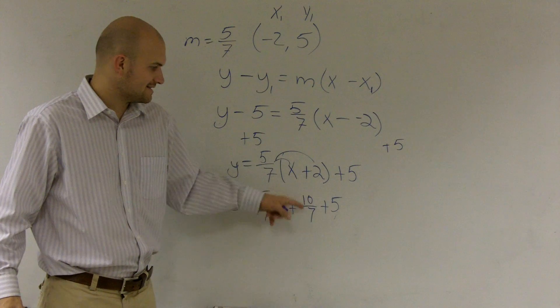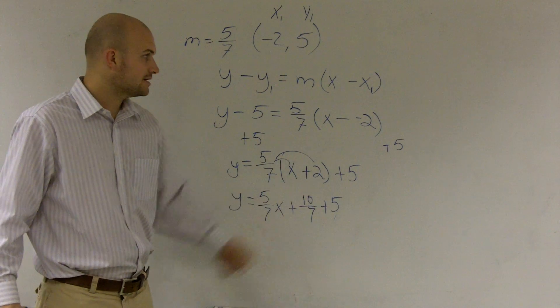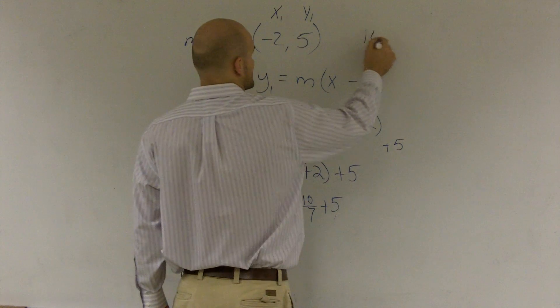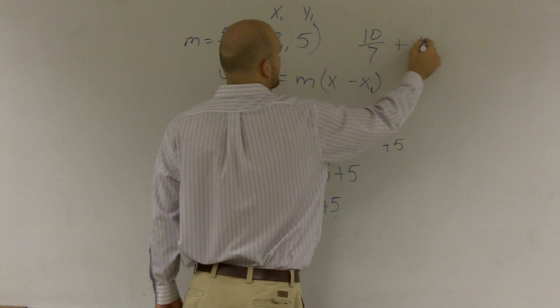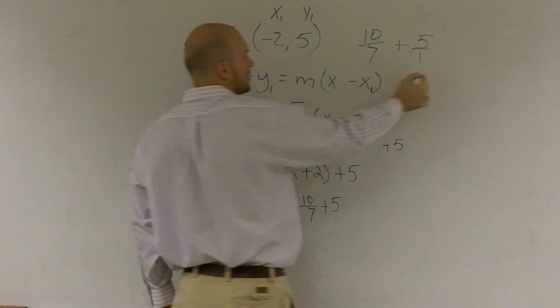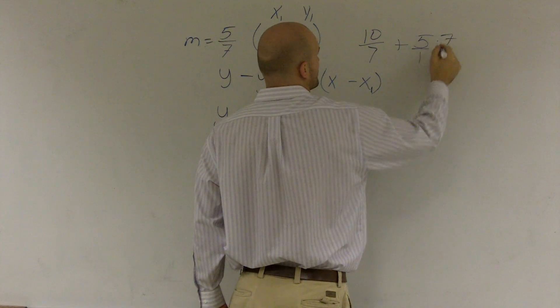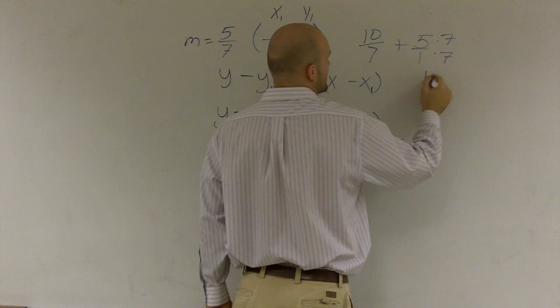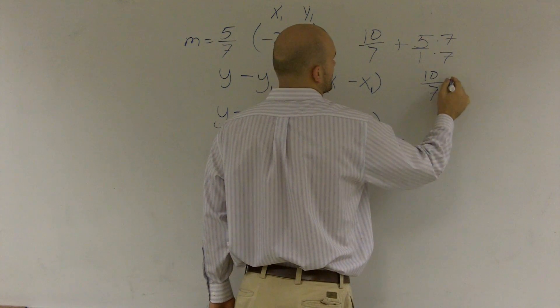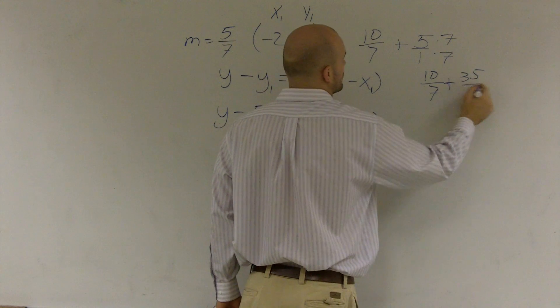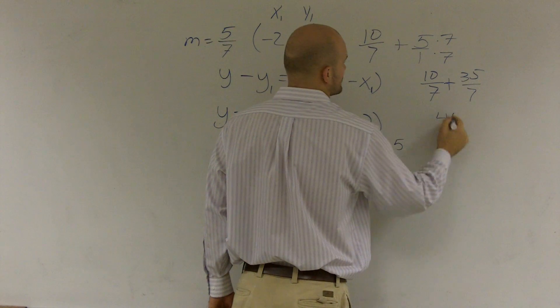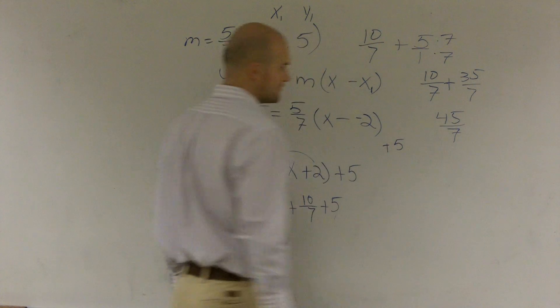Well, I need to put 5. To add these two together, I need to put 5 as the same fraction. So I'll just kind of do a little sidebar here. 10 over 7 plus 5 over 1, I need to multiply by 7 over 7. So therefore, I get 10 sevenths plus 35 over 7, which is 45 over 7.